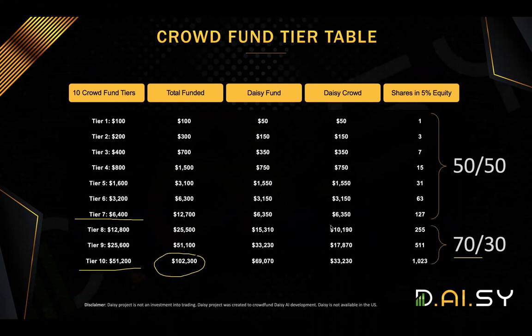Every tier will have a number of equity stock shares. With tier 1 you get one share, with tier 2 you get three shares, and so on.